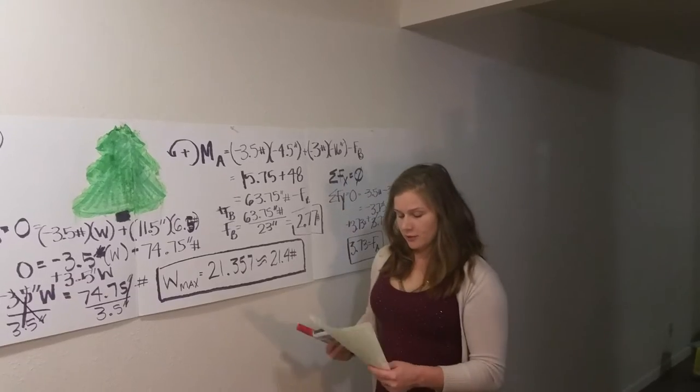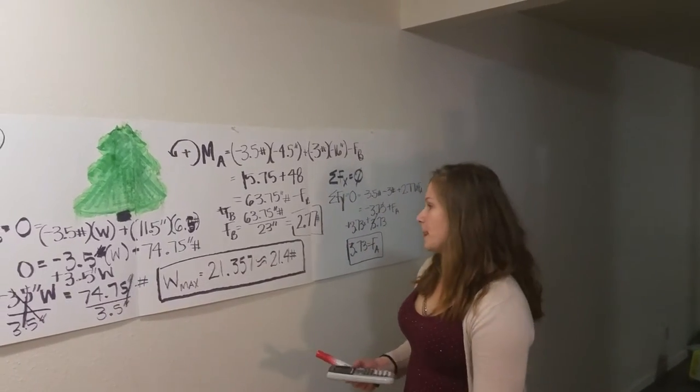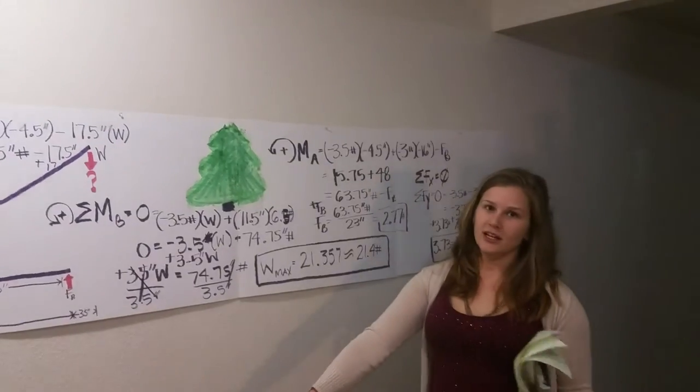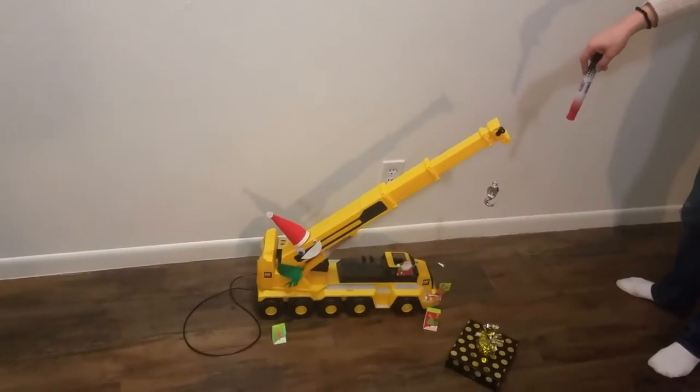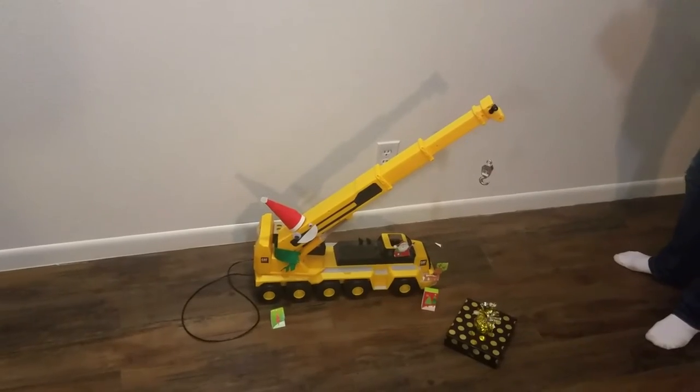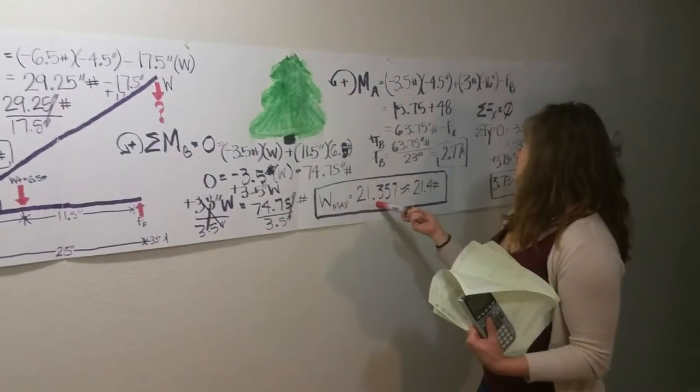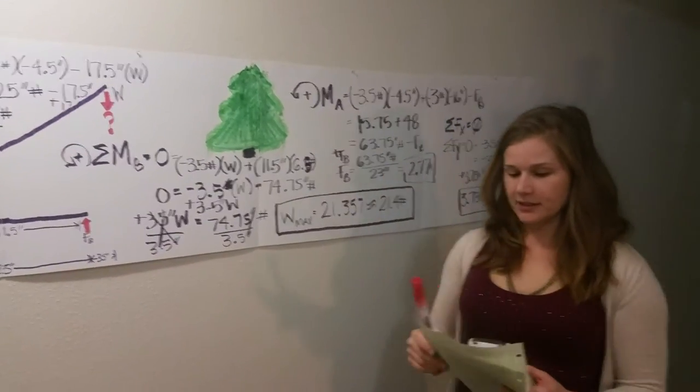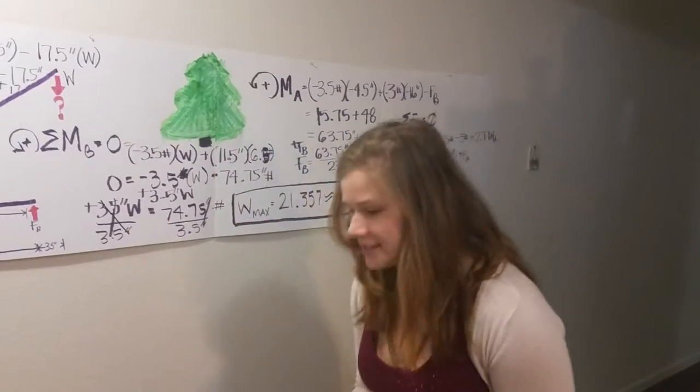But to answer the question for the overturning moment, the maximum weight that you could have on Charlie the Christmas Crane would be 21.4 pounds. And I'll do a little demonstration down here.